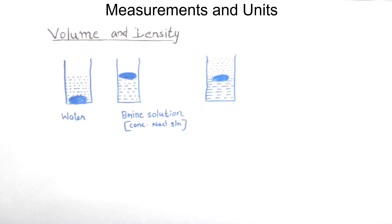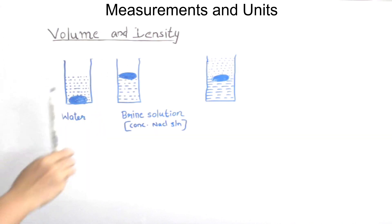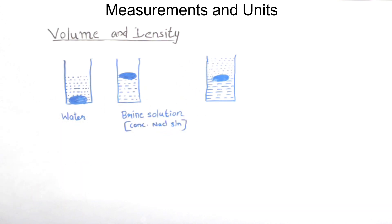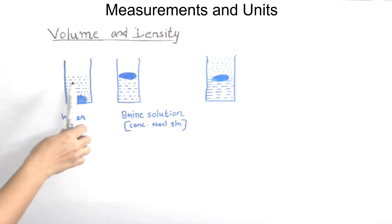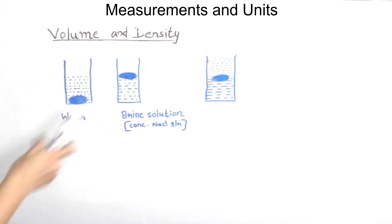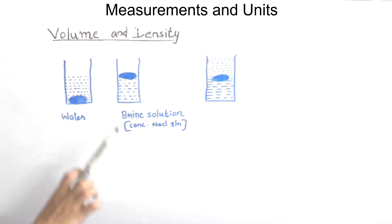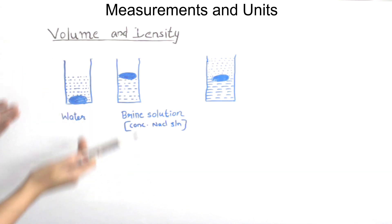What we are going to do is mix it with the brine solution. When you mix salt into the water, you increase the density of the solution. If you add enough salt in the water, the density rises so the egg floats.